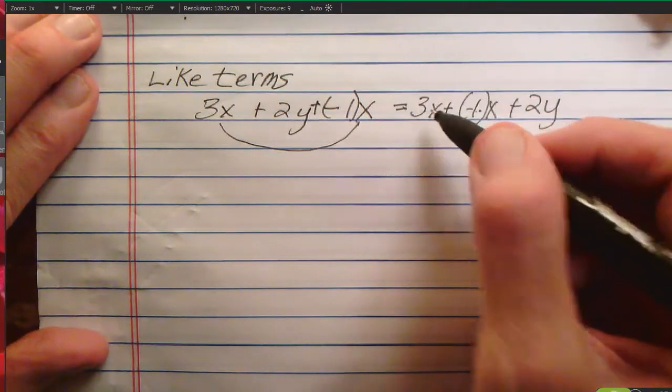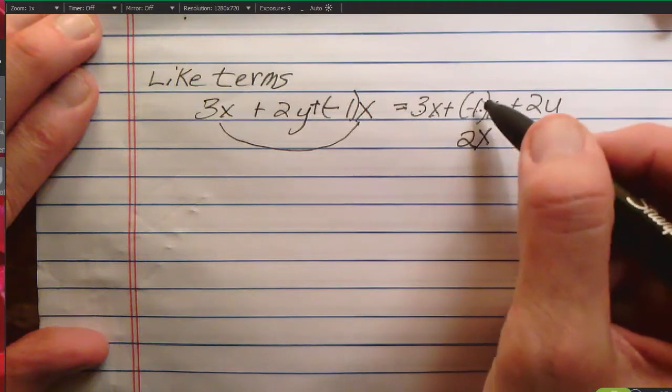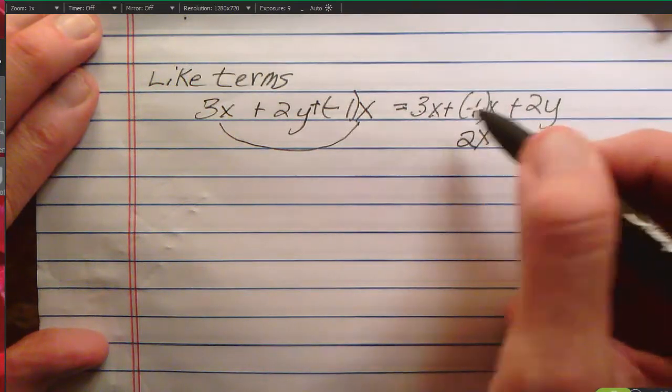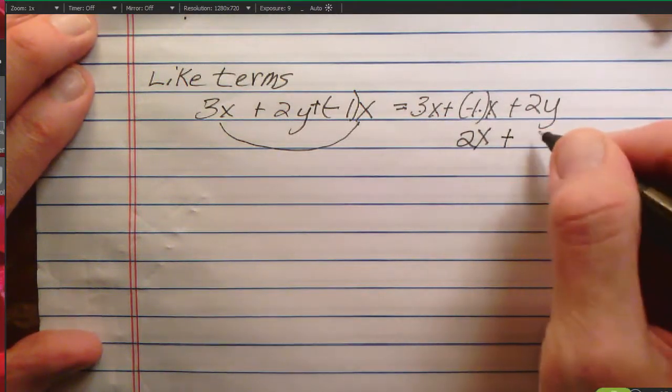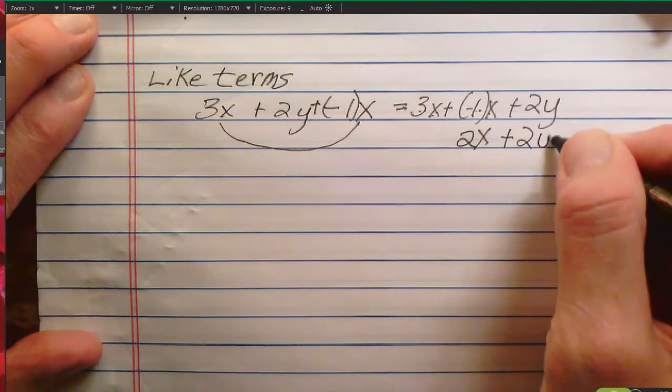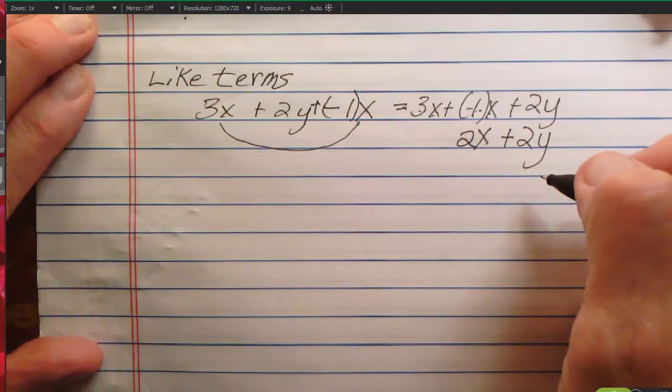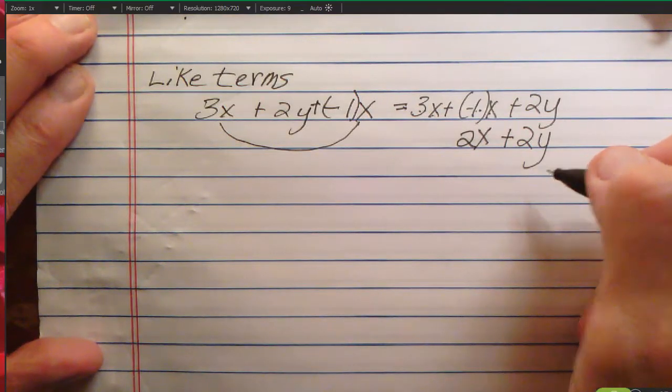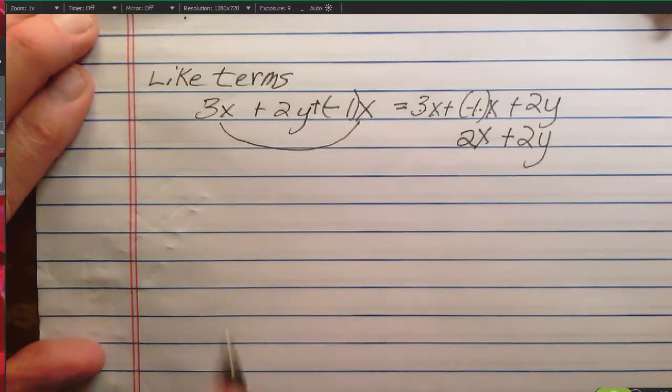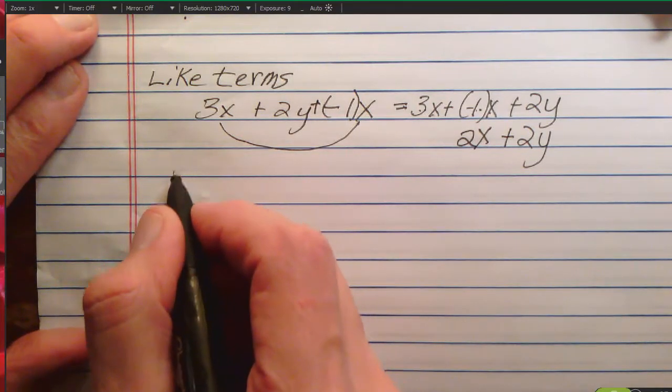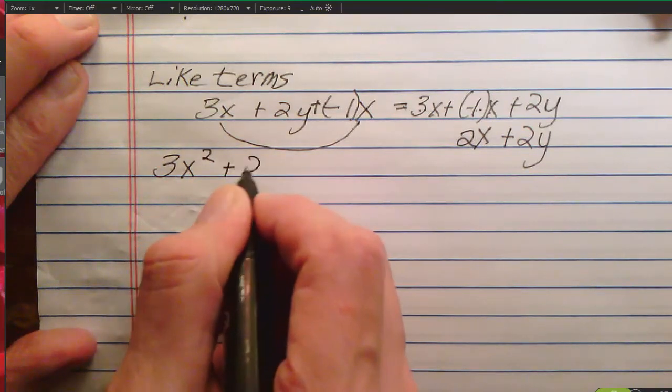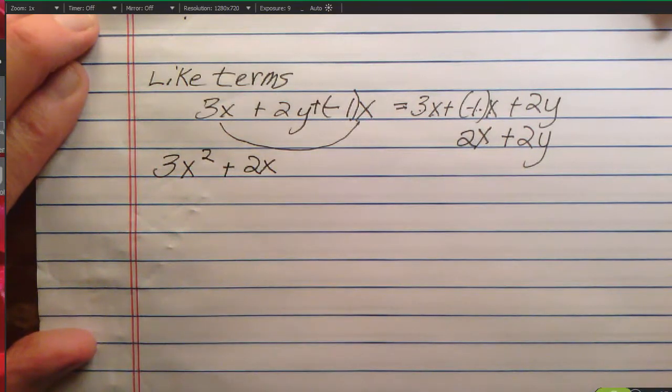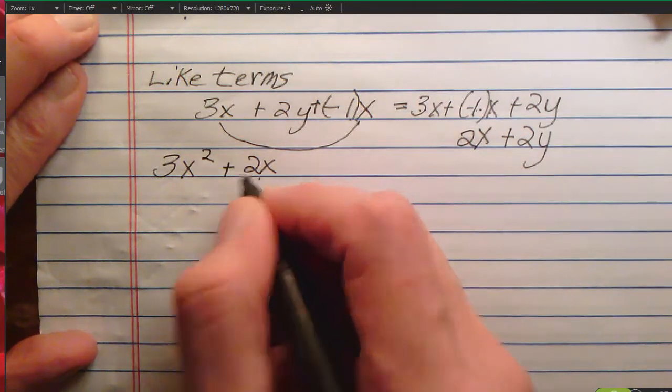So, I'll have 3x plus negative 1x plus 2y. 3x plus negative 1x, well, 3 plus negative 1 is 2, so that's going to give me 2x. We don't multiply the letters or add them separately. They're all part of the same term. I have an x term, I have 3 of an x. I have a negative 1 of an x. When I add these together, I have 2 of an x. Meanwhile, the 2y cannot combine with the x terms because it's got a different letter.